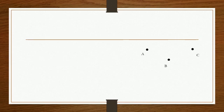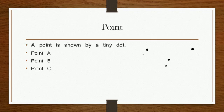A point is shown by a tiny dot. A point can be given a name. Capital letters of the English alphabet are used to name a point. Point A, point B, and point C are shown in the figure alongside.